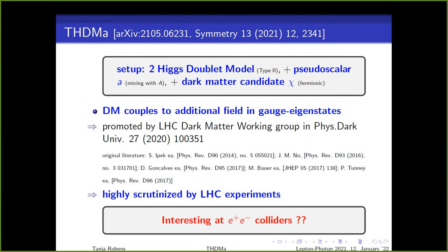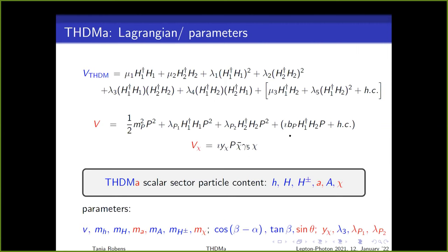One question is whether this model is also interesting at e+e- colliders. A brief theory slide: the typical 2HDM potential, the additional potential linking field P which gives the additional pseudo-scalar, and the coupling to dark matter. The 2HDMA has 2HDM content plus additional content. In blue, everything that is normal 2HDM is labeled.